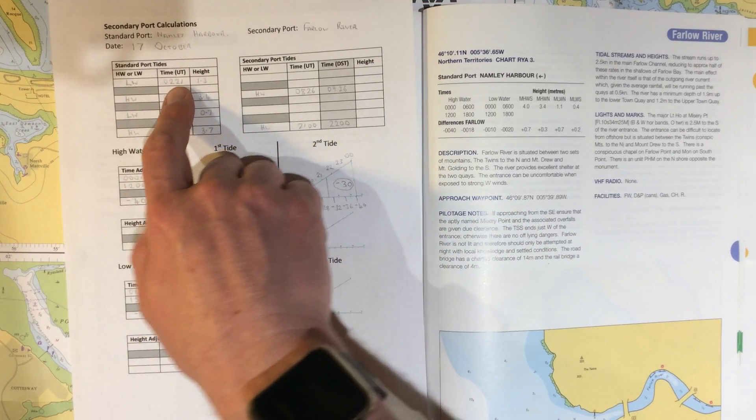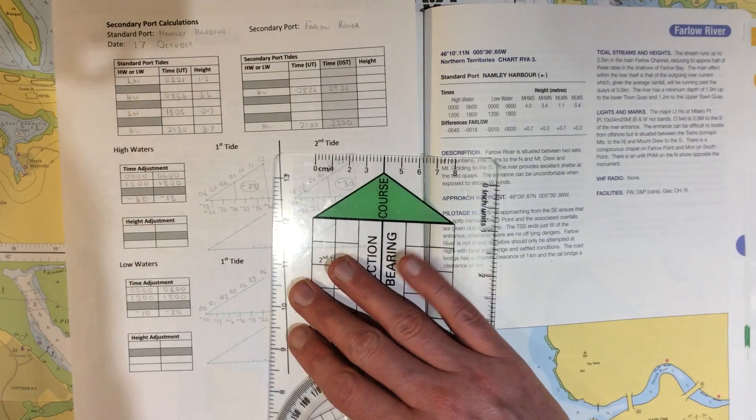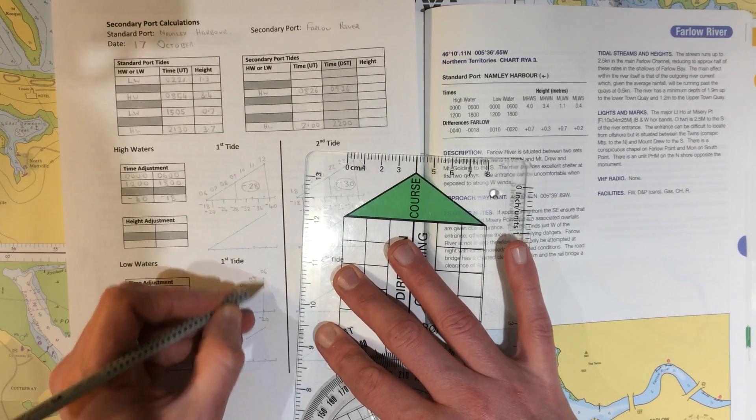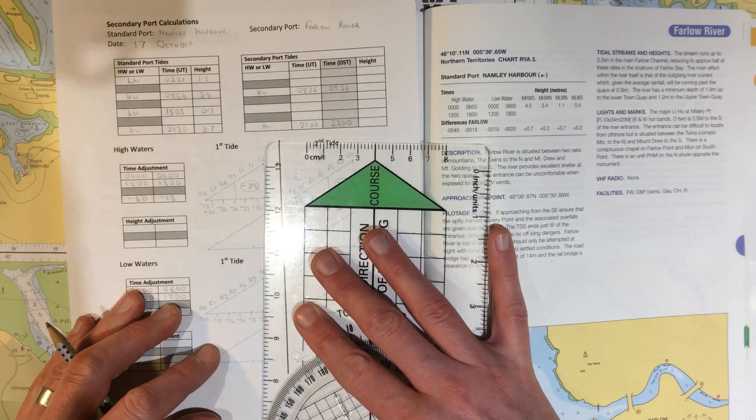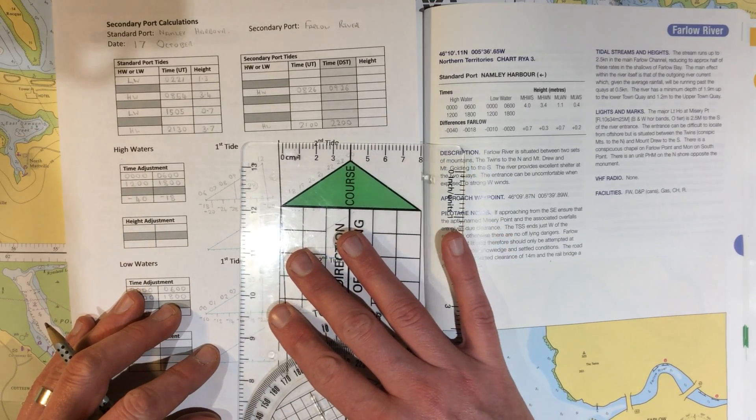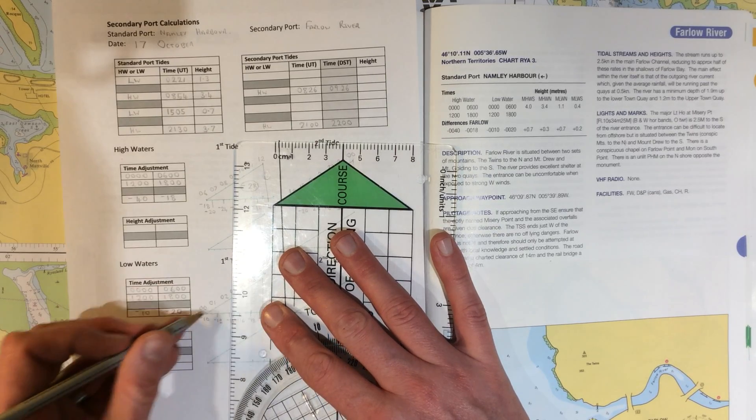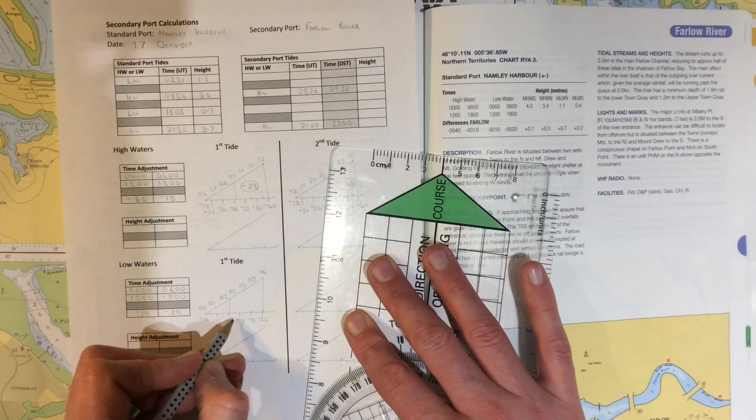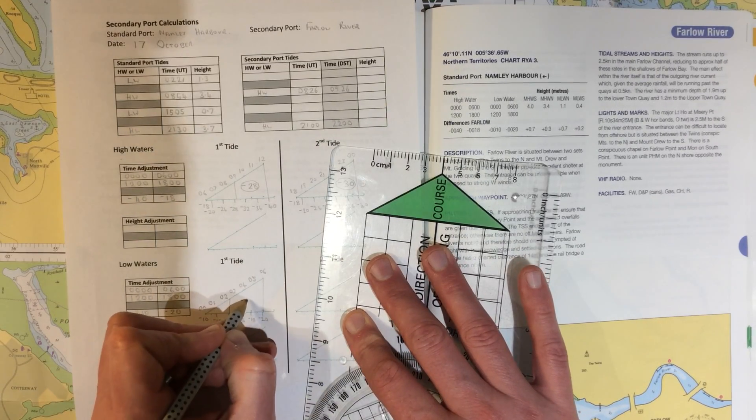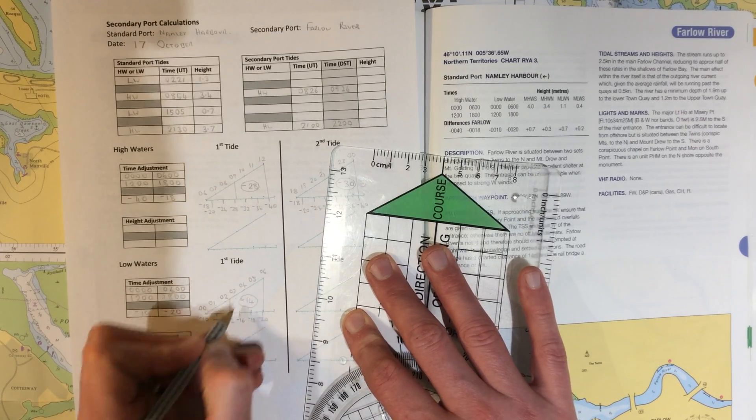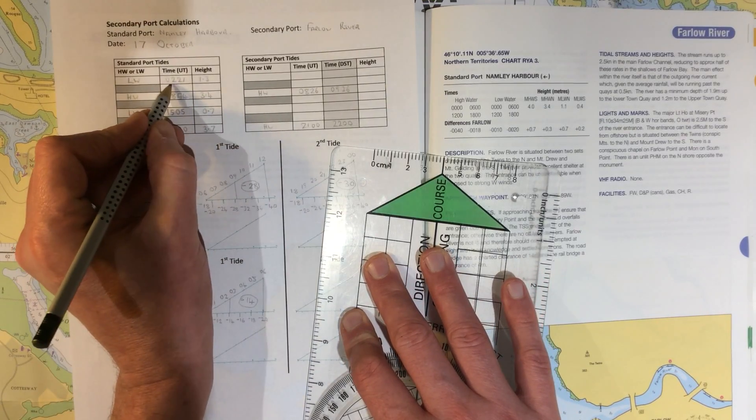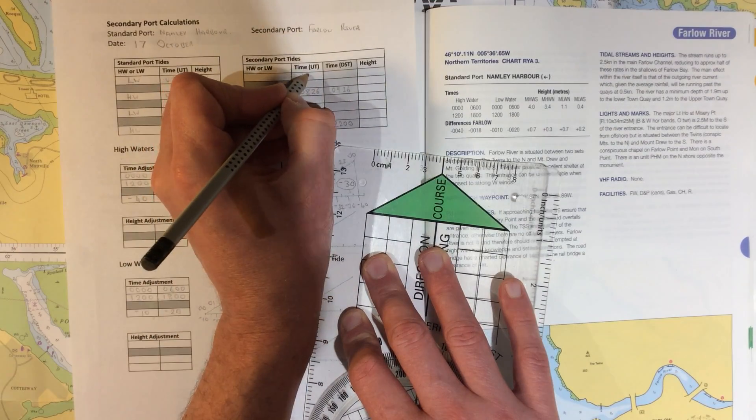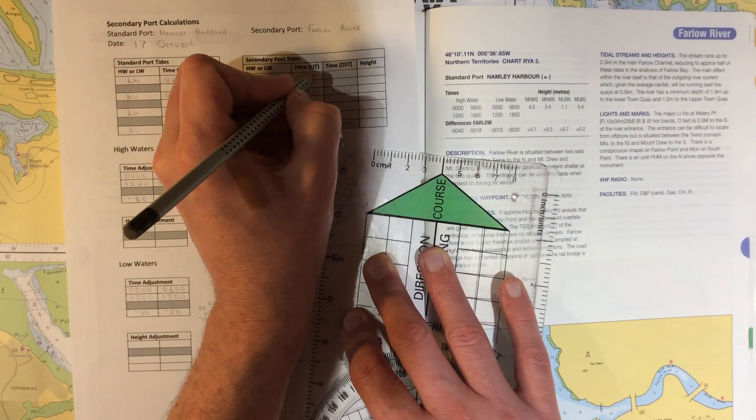Now the low water time was actually at 2:20. So when we first draw on the line that links up 6 o'clock in the morning to its adjustment of 20 minutes, and then go parallel to that until we get to about 2:20. Looking at this scale here, I think 2:20 is about there. So I come down and I can see that I'm reading off there 14 minutes. So for the first low water time, my adjustment is I'm going to take away 14 minutes. That takes me to 2:06 UT.